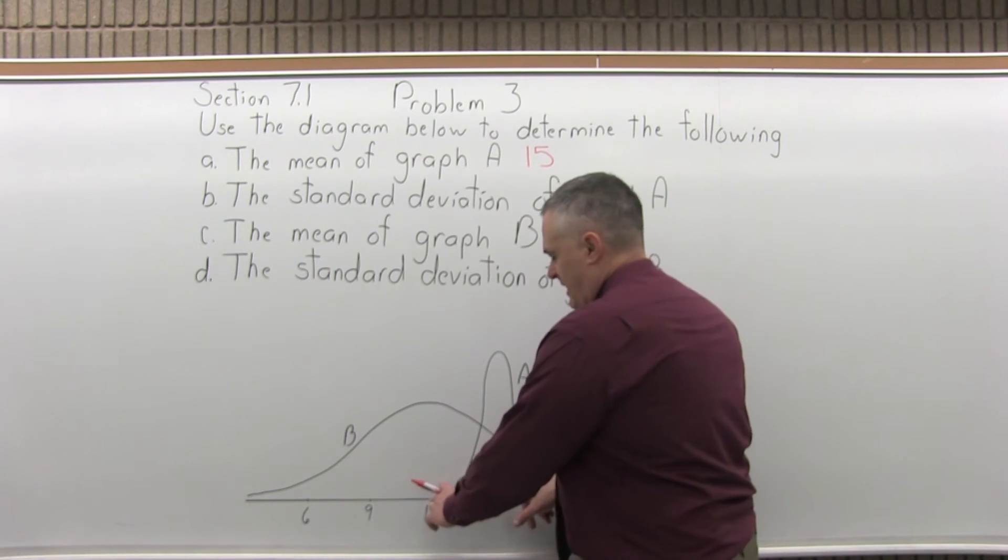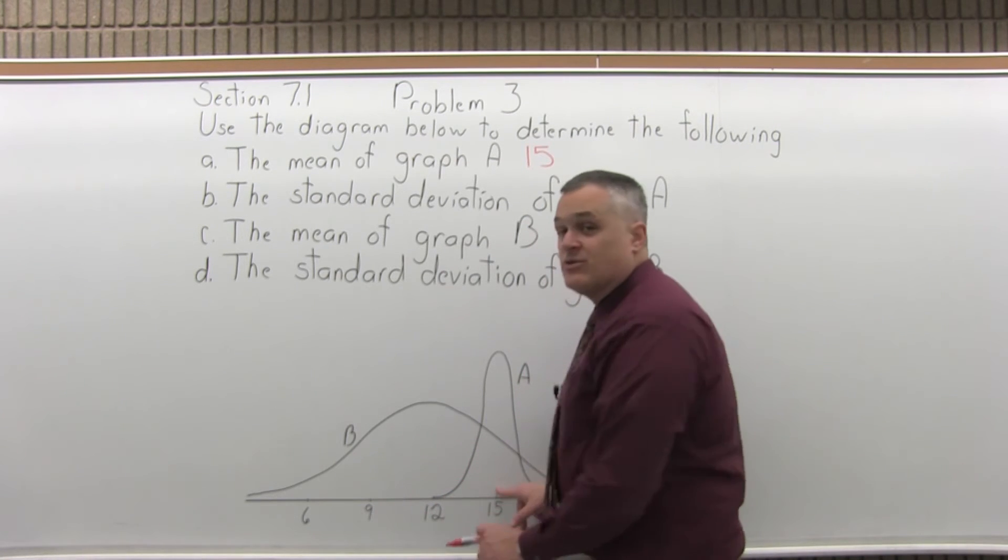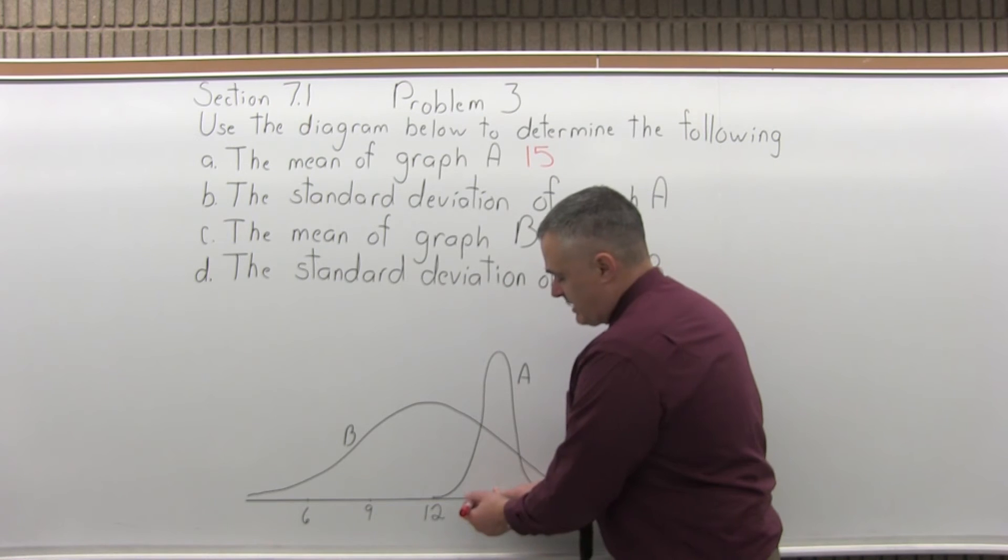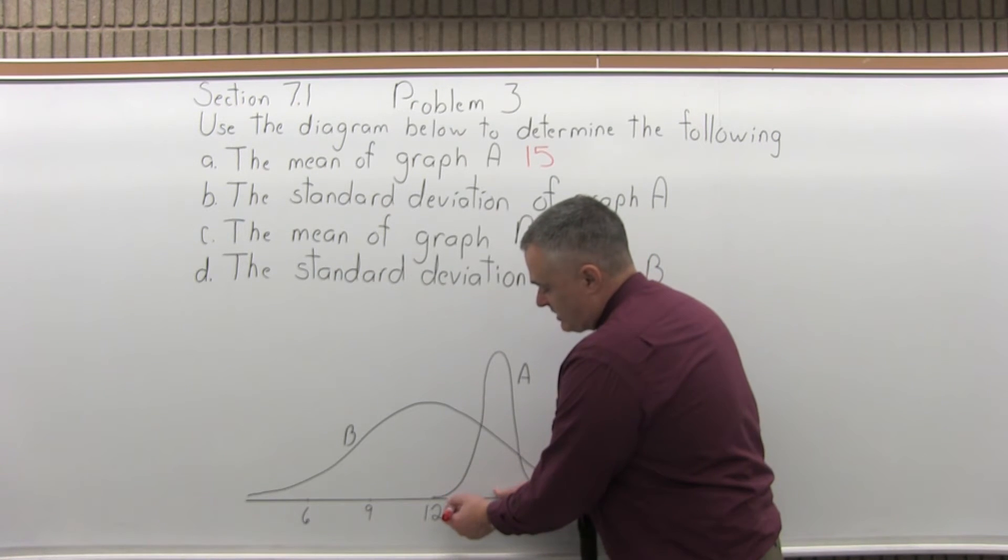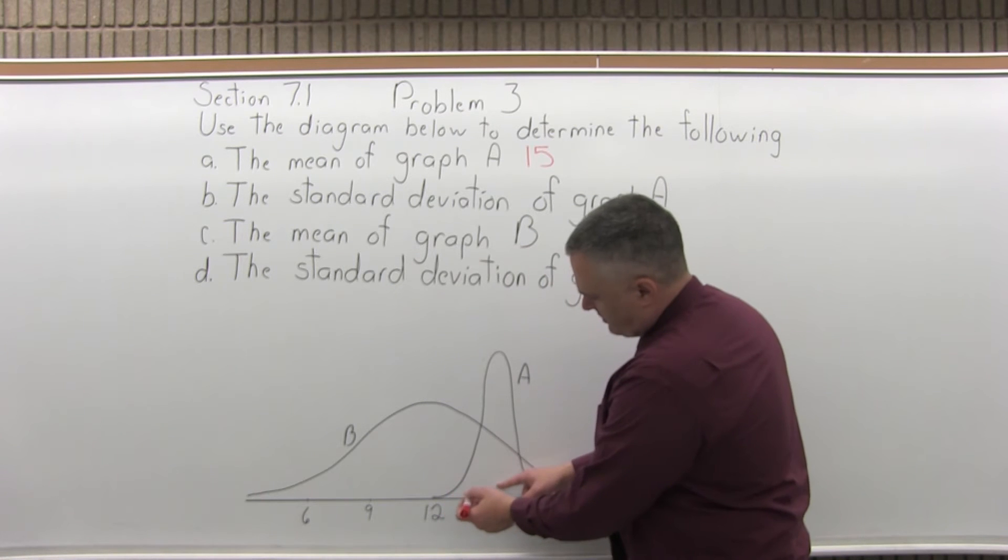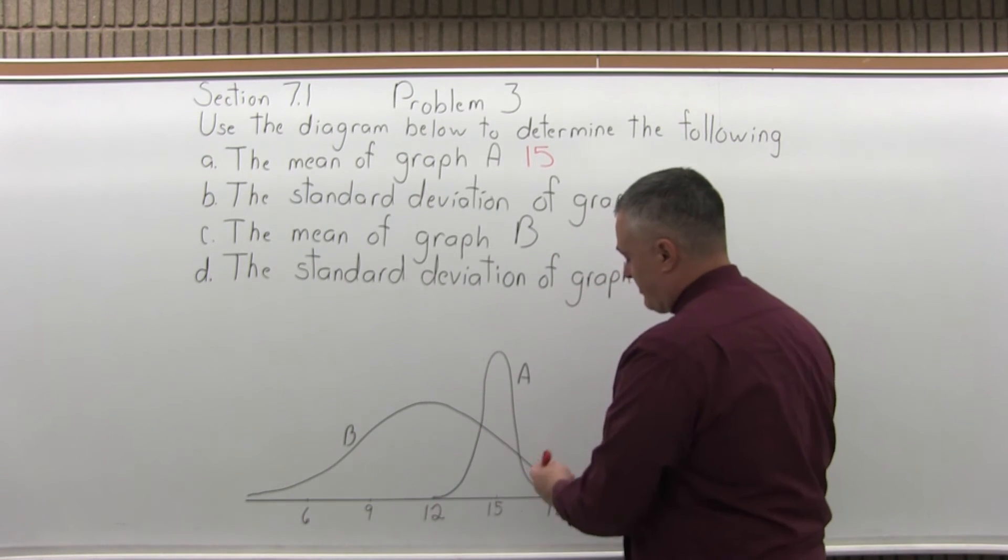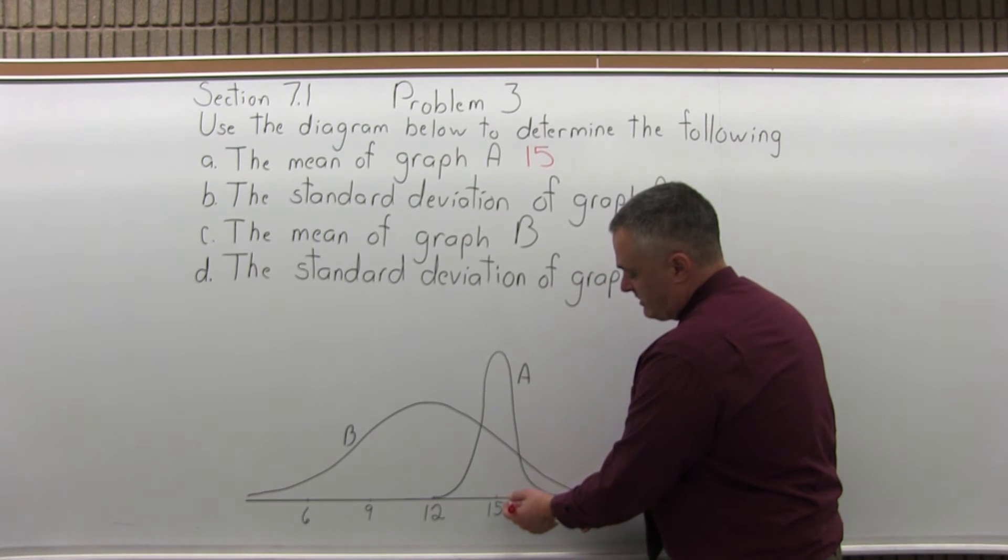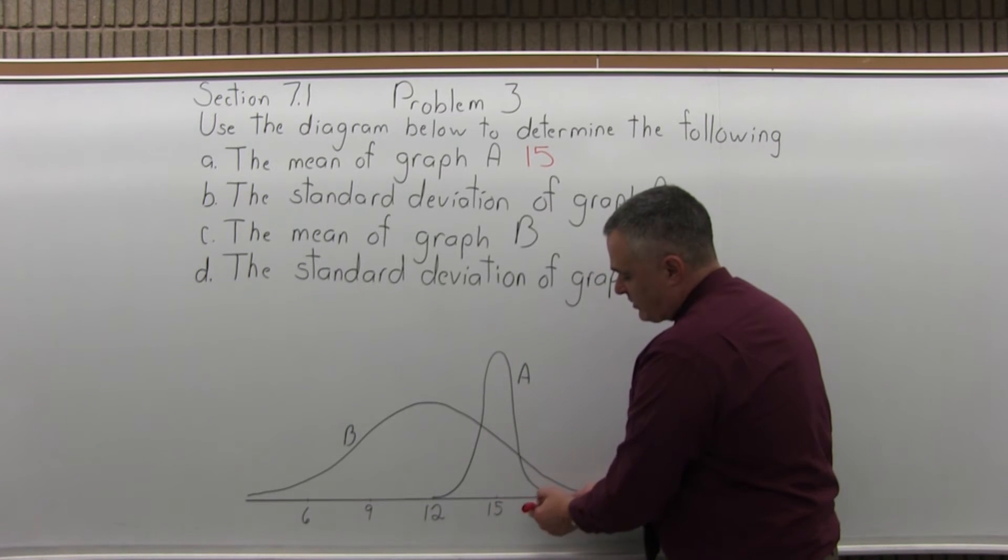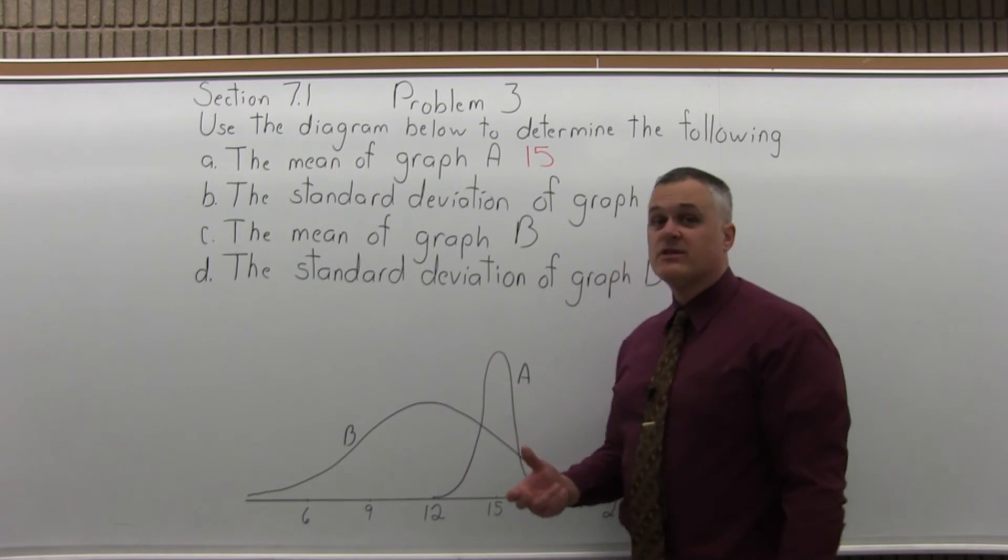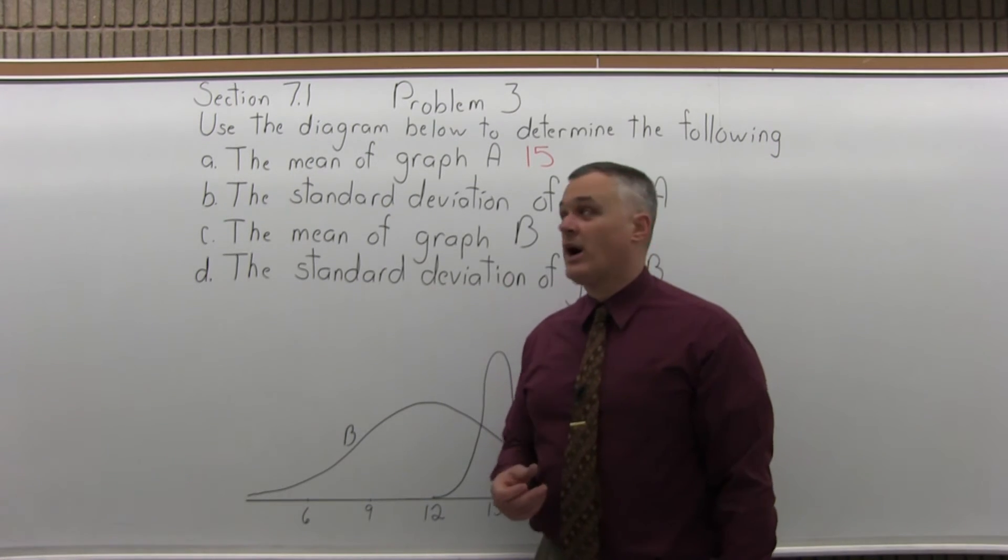and it goes down to 12, well, if each standard deviation were 1, you'd have one standard deviation take you down to 14, two standard deviations down to 13, and three standard deviations down to 12. And on the bigger side, one standard deviation bigger would be 16, two standard deviations bigger than 15 would take you up to 17, and then three would take you up to 18. So three on either side, the standard deviation would be 1.